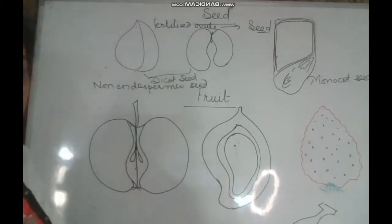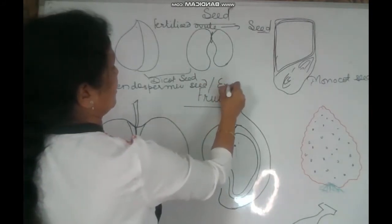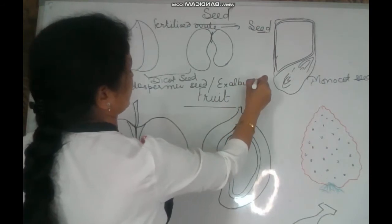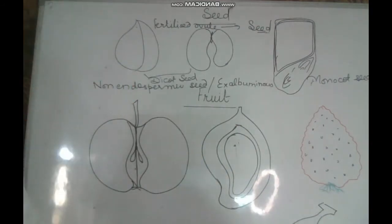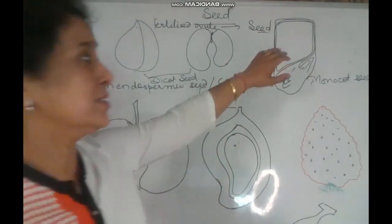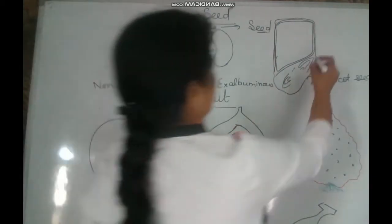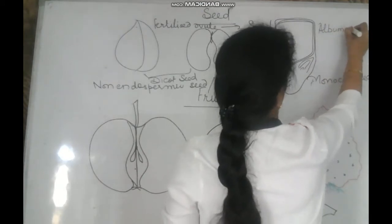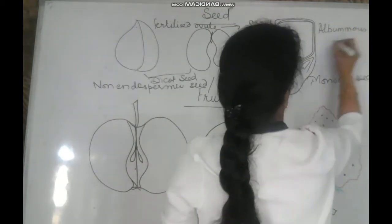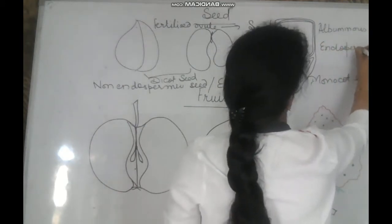The other name for these seeds is ex-albuminous. On the other hand, in monocot seeds, a large amount of endosperm is present and cotyledons are highly reduced. Such seeds are called albuminous or endospermic seeds.